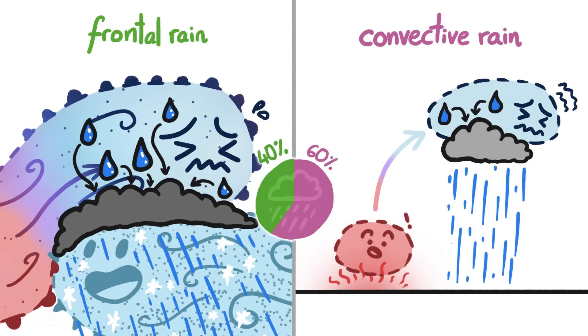That process of rising, cooling, and condensing is very similar to what happens with frontal rain. But because convective rain is triggered by heat from a small patch of ground, rather than the temperature difference between two large masses of air, it's much more complicated.